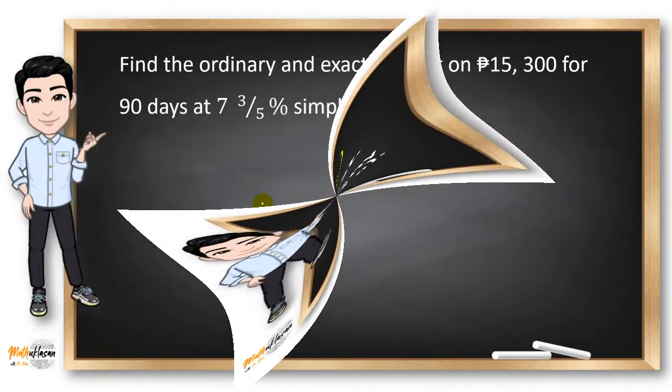Let's take a look at this example. Find the ordinary and exact interest on P15,300 for 90 days at 7.75% simple interest.